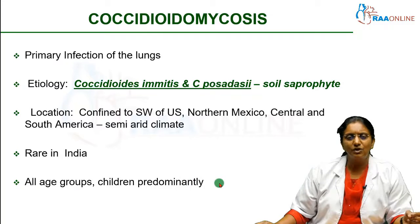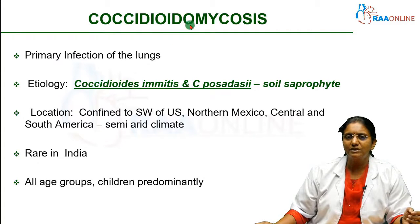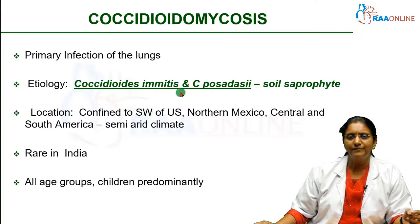The first one we are going to see is coccidioidomycosis. This organism causes a primary infection of the lungs. The disease is coccidioidomycosis and it is caused by a dimorphic fungus, Coccidioides imitis and Coccidioides posadasii.